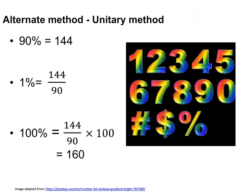Another method is the unitary method, in which 1% of the amount is calculated, then multiplied by 100 to get the full amount, that is 100%. This example illustrates this method.